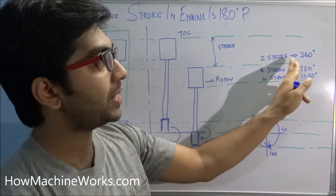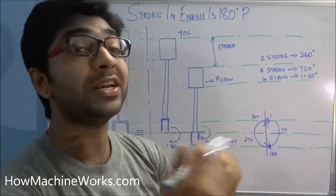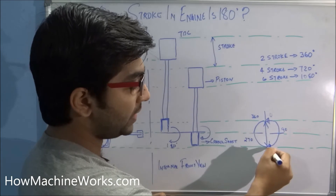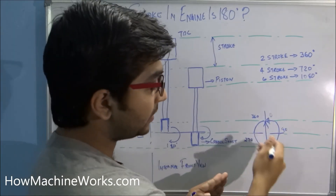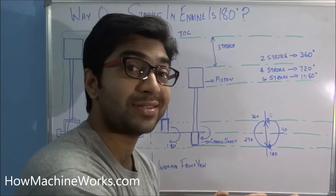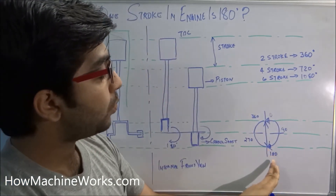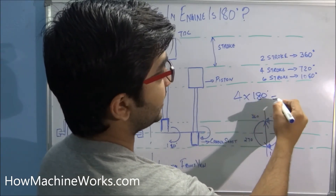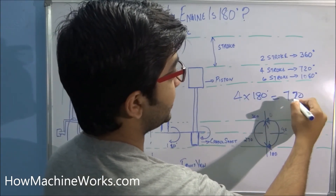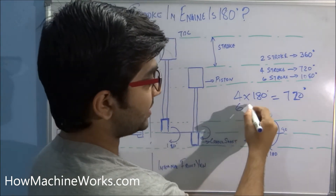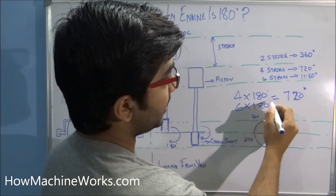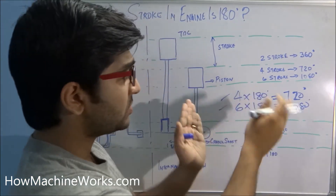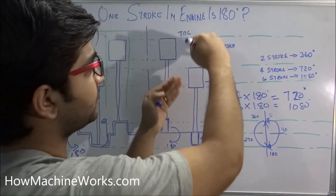For a two-stroke engine, 360 degrees of crankshaft rotation produces two strokes: 180 degrees going down, then another 180 degrees going upwards. For a four-stroke engine, it is 180 degrees multiplied by four strokes, equal to 720 degrees of crankshaft rotation. For a six-stroke engine, six multiplied by 180 equals 1080 degrees of crankshaft rotation.